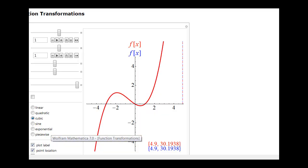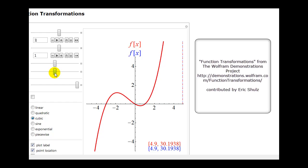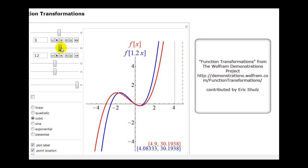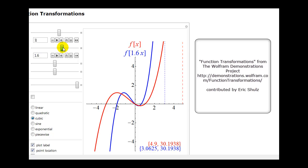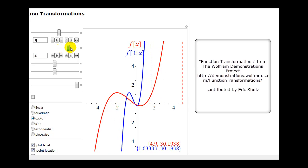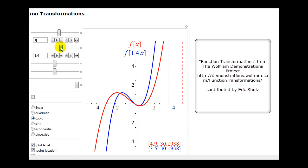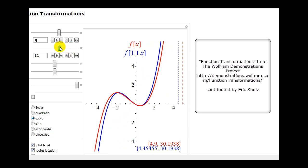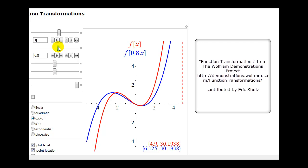Let's take a look at a graph of this as well. The transformed function will be in blue. As b is greater than 1, the transformed function is compressed horizontally. Notice that the x-intercepts do change now, and if b is between 0 and 1, the function is stretched horizontally as we see here.